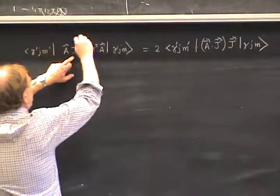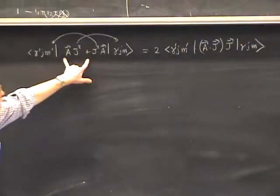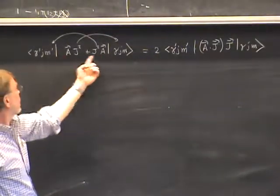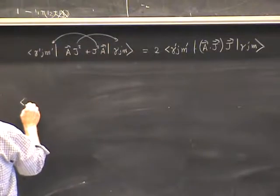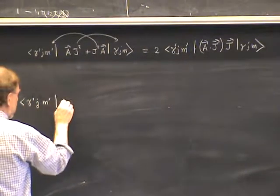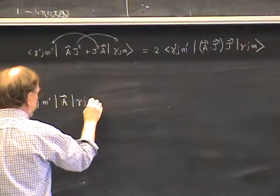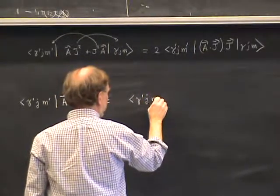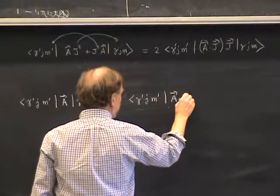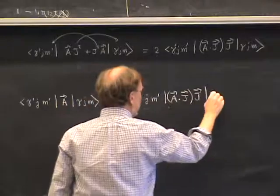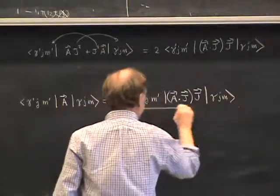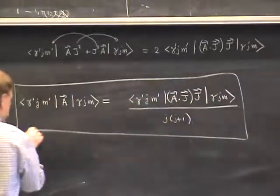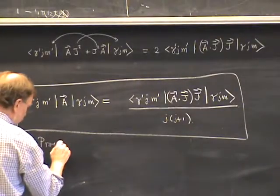This is the projection theorem: ⟨γ′, j, m′| A |γ, j, m⟩ = ⟨γ′, j, m′| (A·J) J |γ, j, m⟩ / [j(j+1)]. In the form we use it: the matrix element of any vector operator A between states of the same j is proportional to the matrix element of J, with the proportionality factor given by the expectation value of A·J divided by j(j+1).